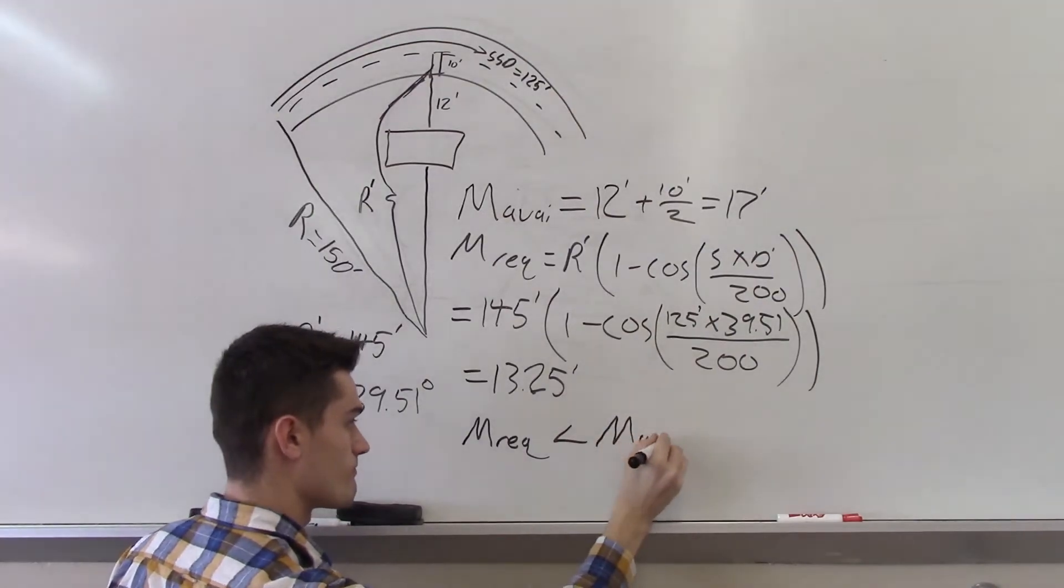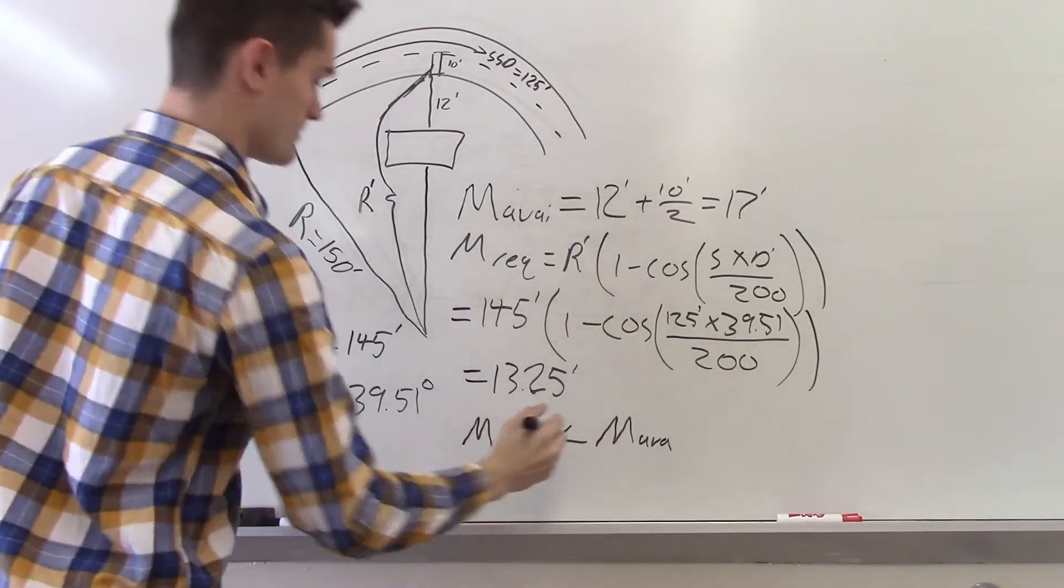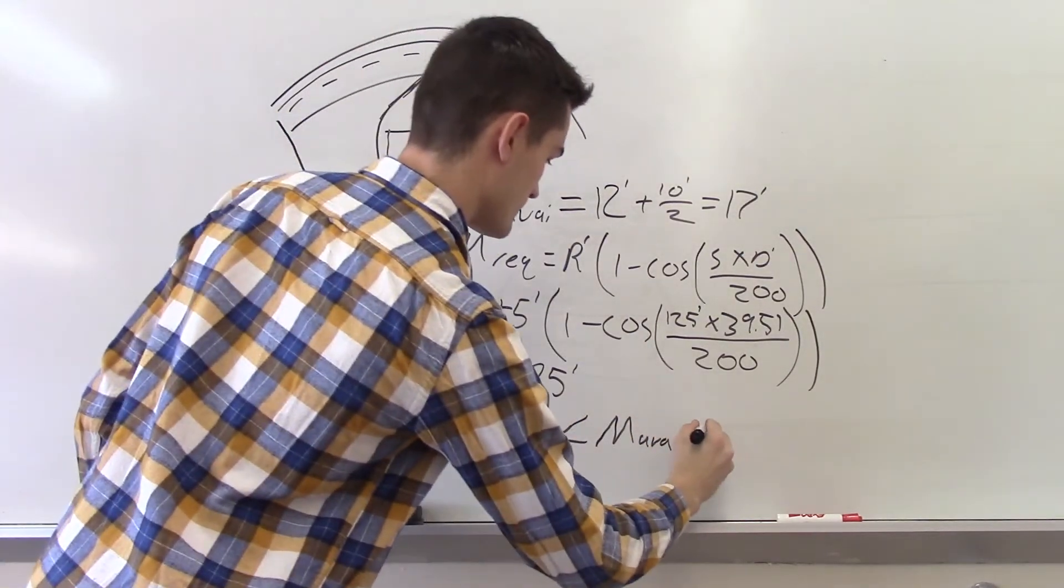Since M available is greater than M required, the design does meet the requirement for stopping sight distance.